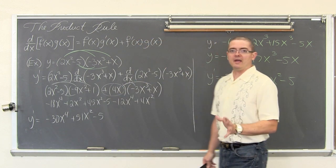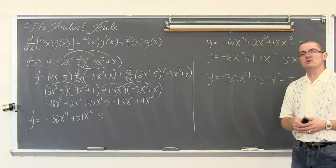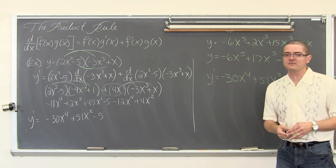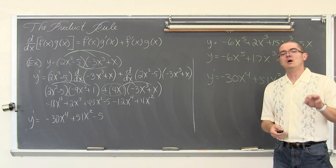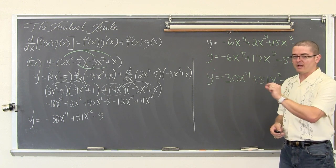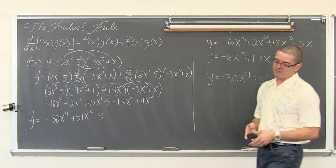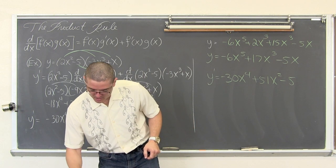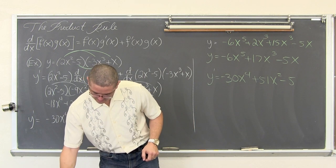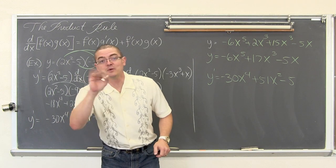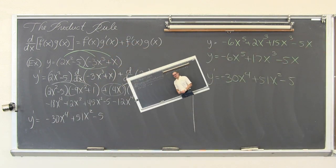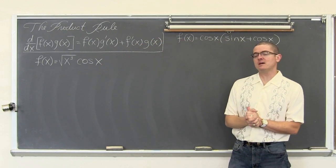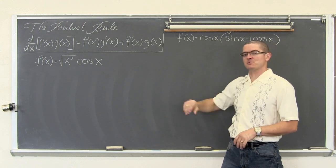So if you can clean up your original problem before immediately applying the product rule, you might save yourself time. The next examples, though, will require the product rule. Our next two examples: f of x equals the square root of x to the third power times cosine of x, and another example beside it.